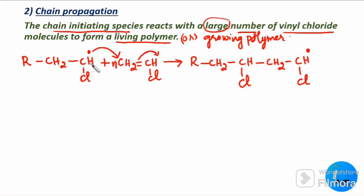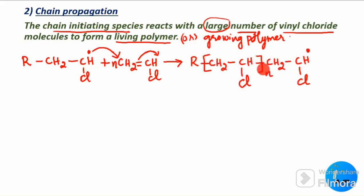The unit -CH2-CH(Cl)- keeps repeating. We represent this by placing N as a subscript on the repeating unit. Be careful: put N at the bottom on the repeating unit bracket, not after the final dot position, so the dot is preserved. This is an intermediate product called the living polymer or the growing polymer.